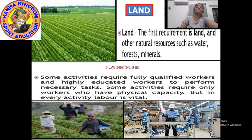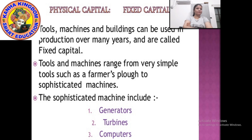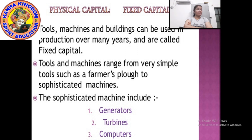The first two things we require for production are land and labor. Now physical capital — specifically fixed capital. Tools, machines and buildings: if we construct a building on the land, the machines which we use for production, the tools which we use — these can be used in production for many years. That's why they are called fixed capital.